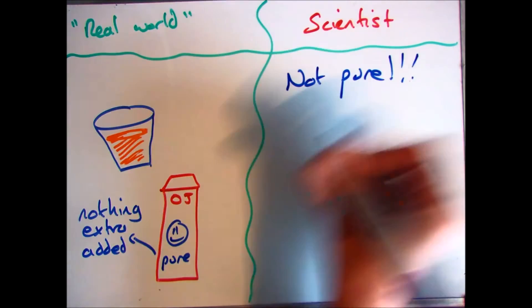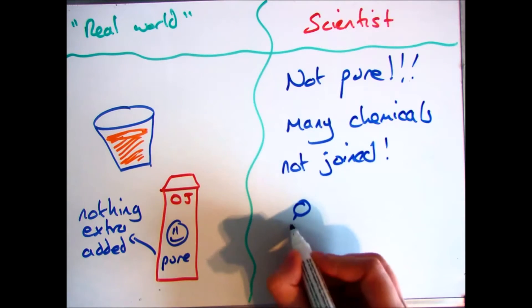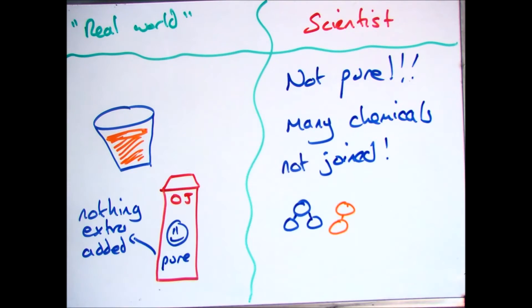However, a scientist would not think that's pure. A scientist would turn around and go hang on a minute, that's got many different chemicals in that aren't joined together. So they'd class that as a mixture.